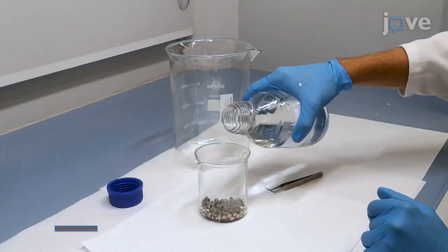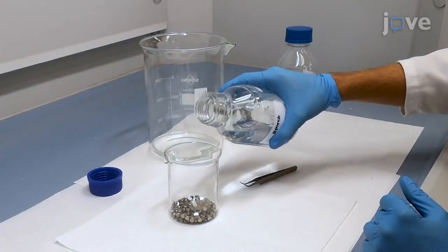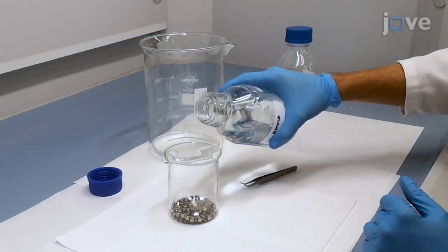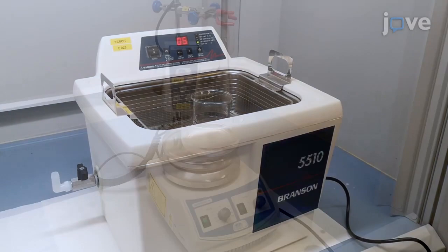Begin the titanium surface functionalization by washing the titanium discs with deionized water in a glass beaker. Then discard the water before washing the discs with 70% ethanol. Decant the solution to sonicate the washed implants at 50 degrees Celsius for 5 minutes in deionized water.